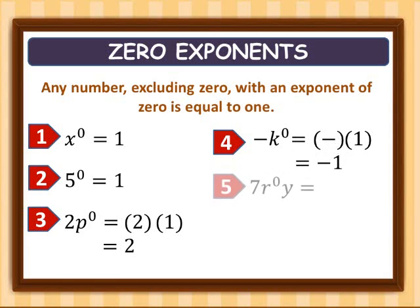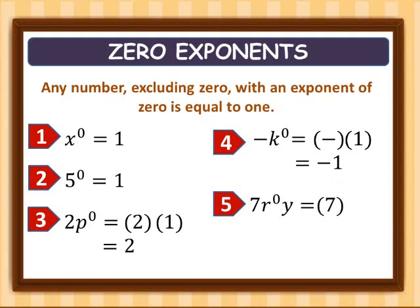Fifth example: seven r raised to zero, y. Seven stays as seven, r raised to zero is one, and we copy y. So seven times one times y equals seven y.